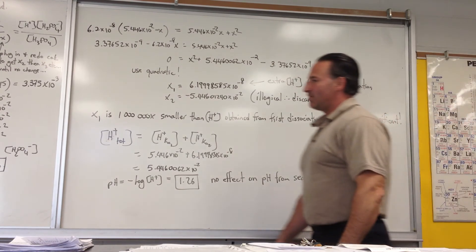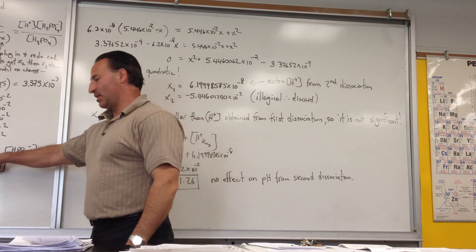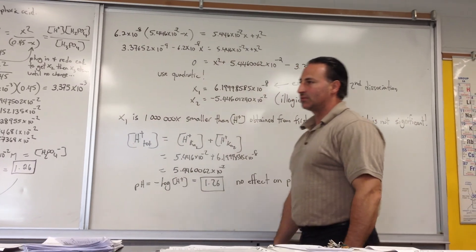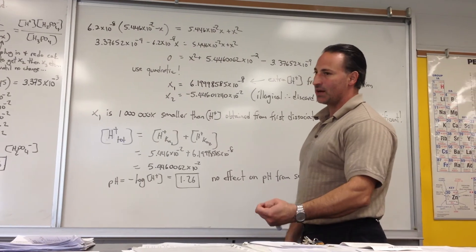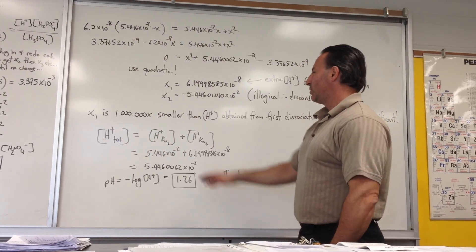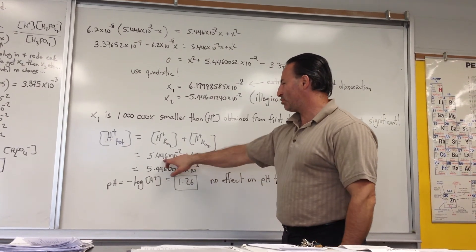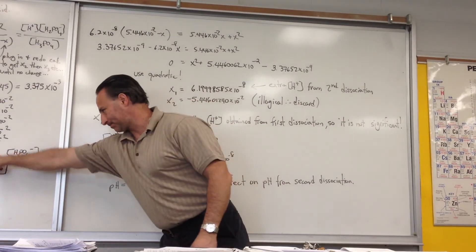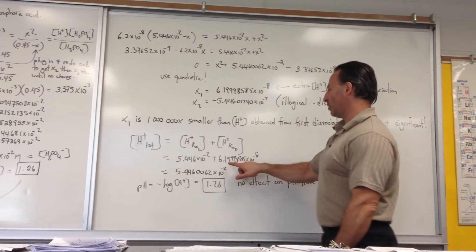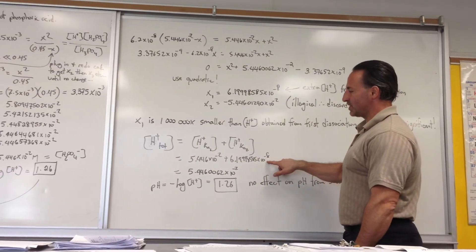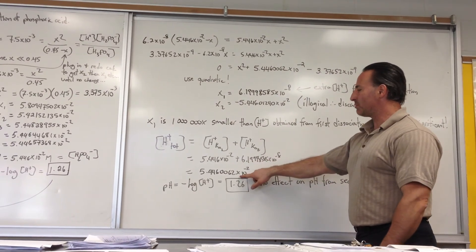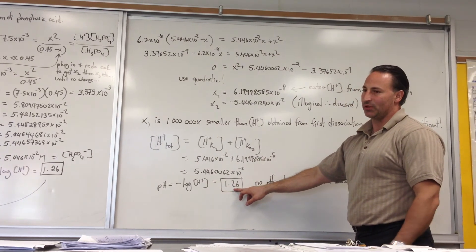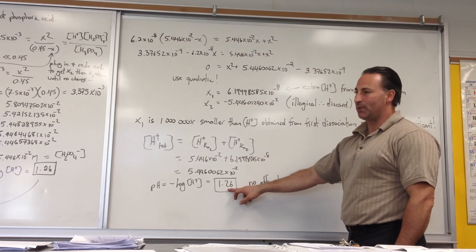Compare that to the 5.4 times 10 to the minus 2 that occurs from the first dissociation. It's 1 million times less. So is that going to affect the pH? Let's find out. We add these two numbers: the 5.446 from the first dissociation which is here, and the 6.2 times 10 to the minus 8 from the second dissociation. We get this number. When we plug it back into the pH calculation we still get 1.26. Same number. No impact on the pH.